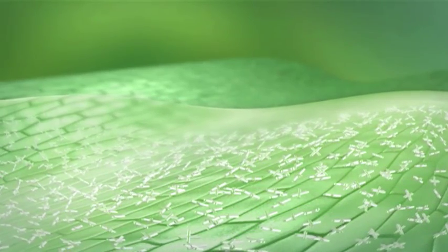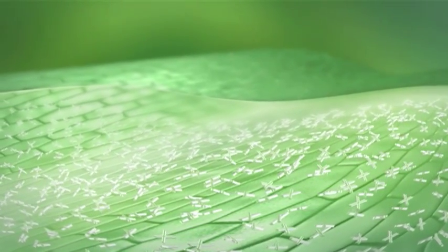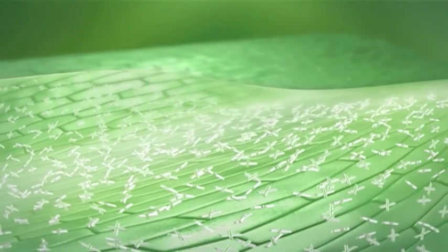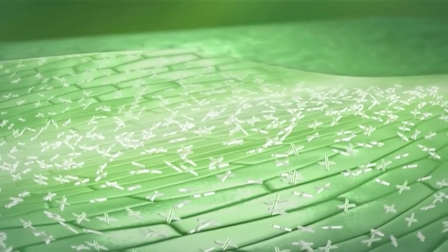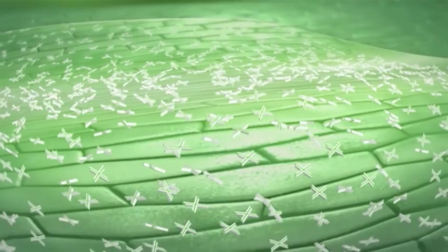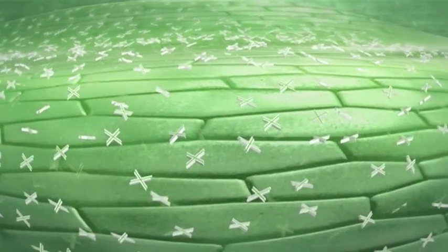Once applied, a portion of the Sercadis adheres firmly to the leaf surface. This leads to excellent rain fastness, the formation of a protective barrier against future infection, and increased biological activity.